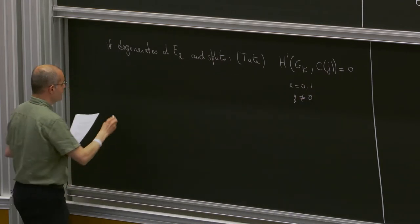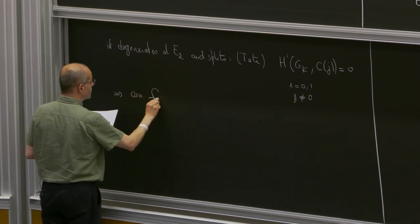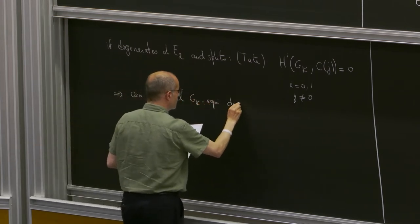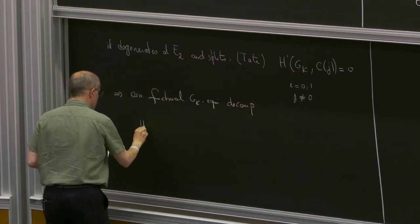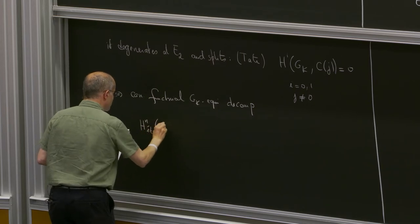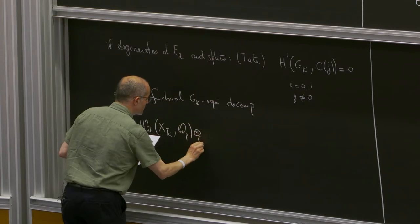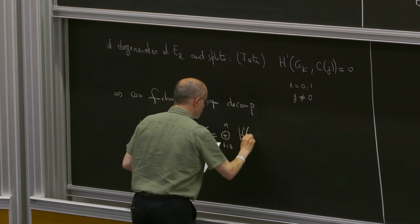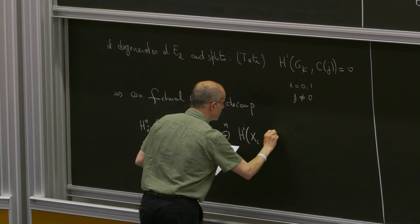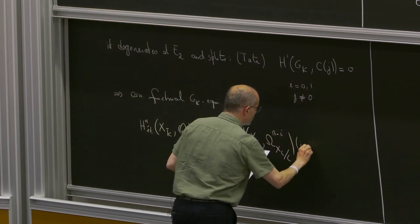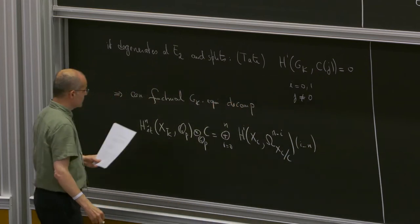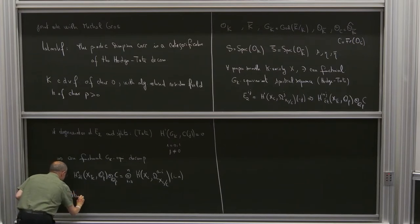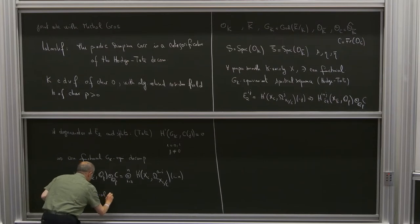This leads to a canonical, functorial, G_K-equivariant decomposition, which we call the Hodge-Tate decomposition: H^n_ét(X_{K-bar}, Q_p) tensor C is canonically the direct sum of H^{n-i}(X_C, Omega^i_{X_C/C})(−i). This was conjectured by Tate and proved independently by Faltings, Niziol, and Tsuji.